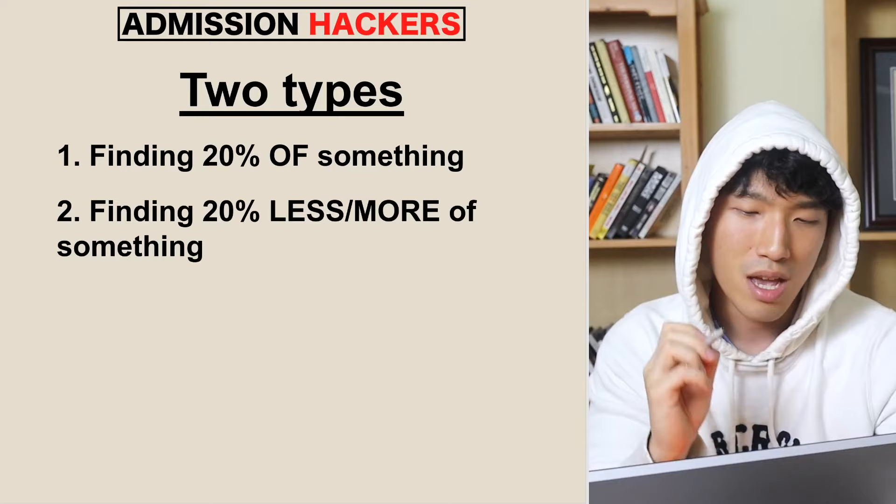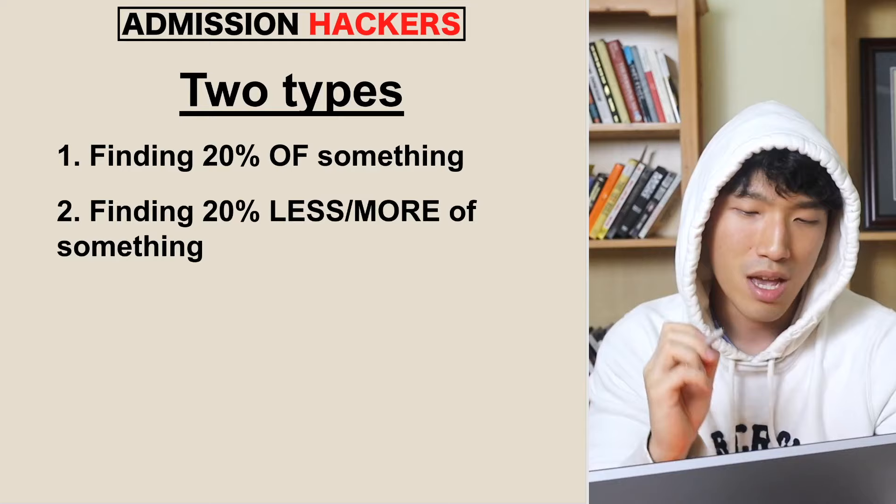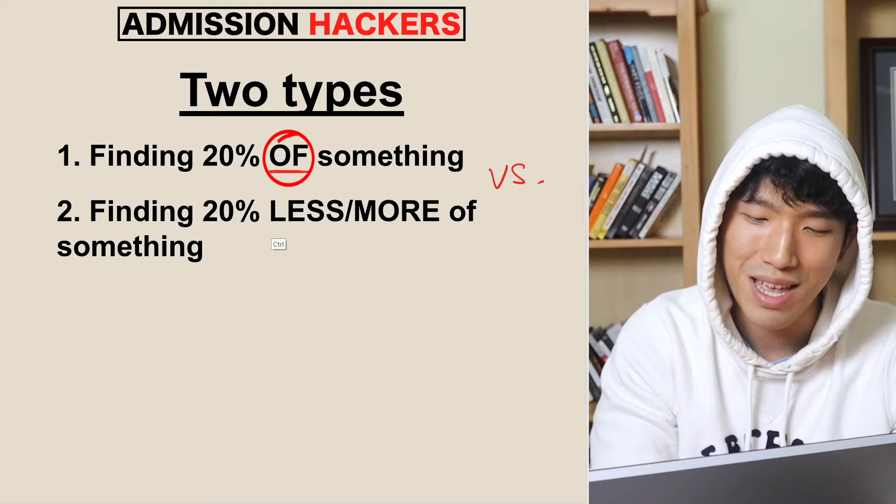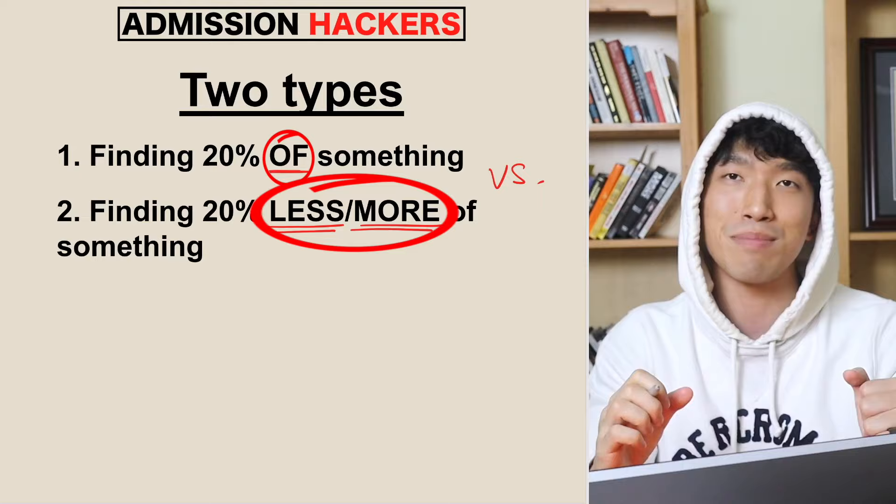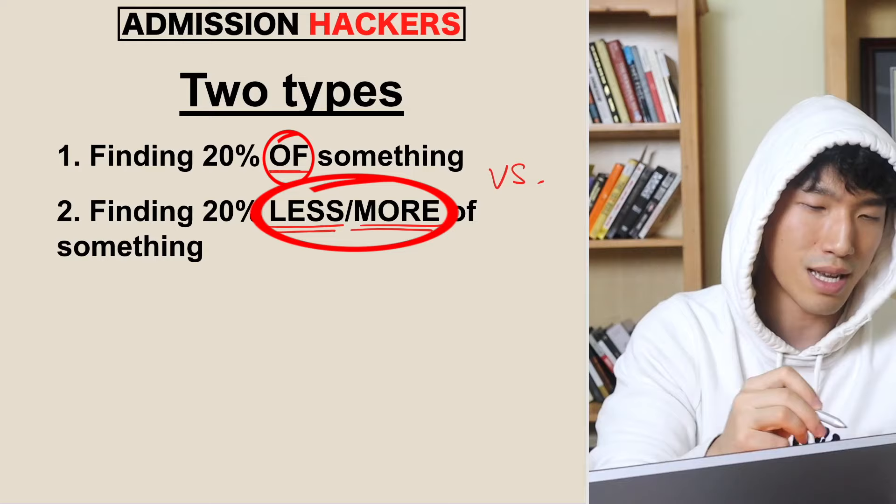The two types are: finding 20% of something versus finding 20% less or more of something. Those are the two different types. If you understand the difference between them, great — but if not, let me explain using a simple example.